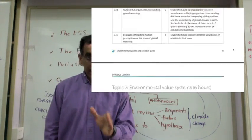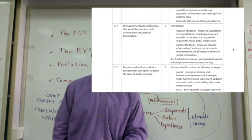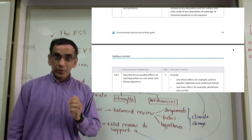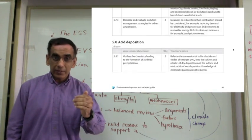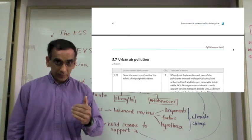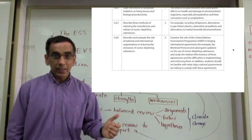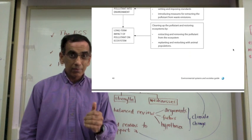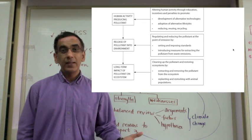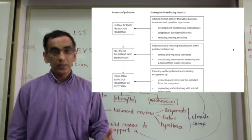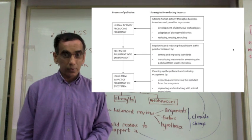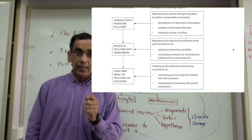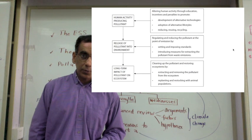Then we have the Pollution Management Model — another extremely useful diagram. It shows you the three tiers in managing a pollution problem: from the first tier, which is to eliminate the problem altogether; to the second tier, which looks at reducing or managing the problem to some extent; and the final tier, which looks at remediating or cleaning up the pollution problem. It's well worth your while to go into the guide and have a look at the Pollution Management Model.